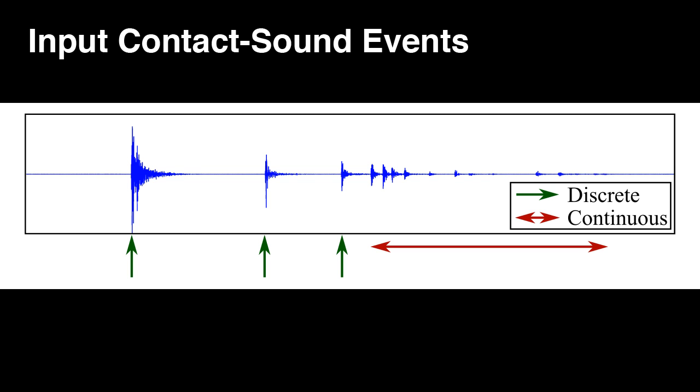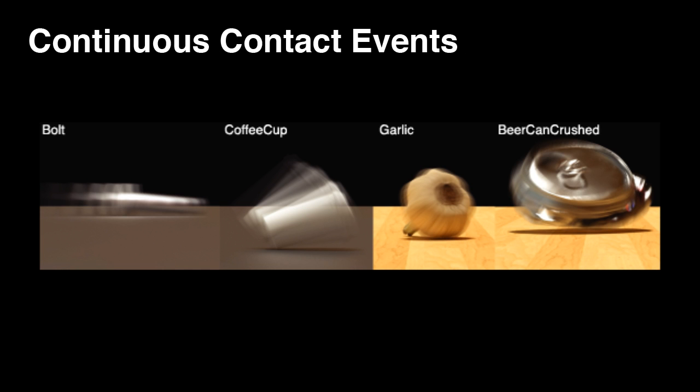Given an input sound, the user identifies representative contact event times, which are either short-lived discrete events, such as a bounce, or longer, more complex continuous events, such as sliding, chattering, and spoiling. Our system attempts to synthesize contact events with similar amplitudes and temporal variation.